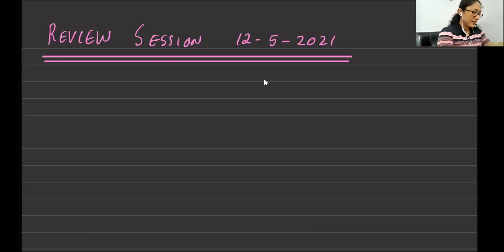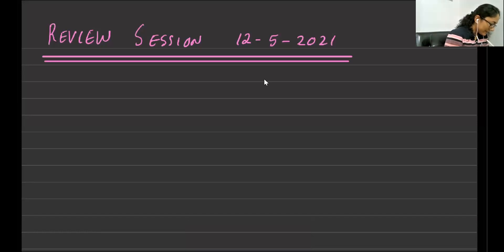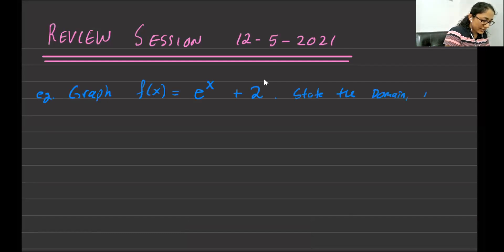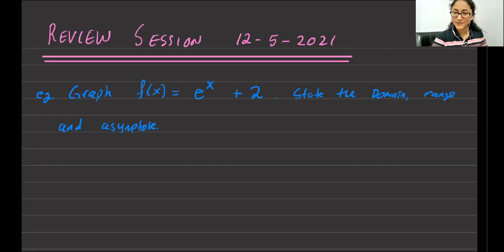So let's work on graphing exponential functions. Here's an example. We want to graph the function f of x equals e to the x plus 2, and we also want to state the domain, range, and asymptote — because exponential functions have asymptotes, as we know.